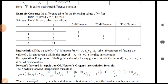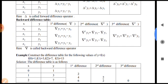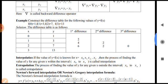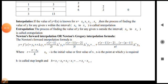For example, if I consider the above example and want to find the value of y at x equal to 2.5, this 2.5 lies within the interval 0 to 3 (where x0 is 0 and x3 is 3), so finding y at x equal to 2.5 is called interpolation. Similarly, if I want to find the value of y at x equal to minus 1 or at x equal to 4, that process is called extrapolation.